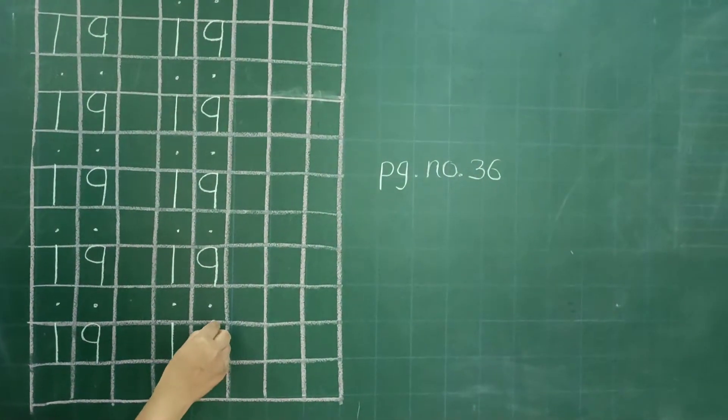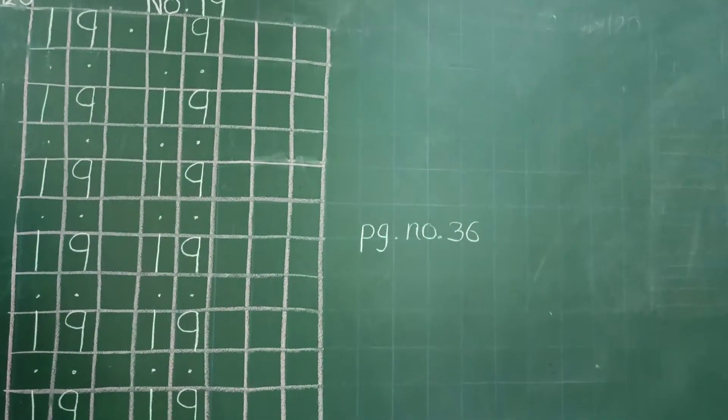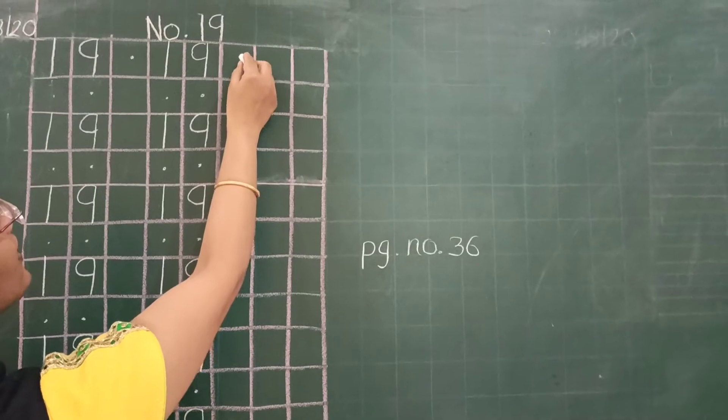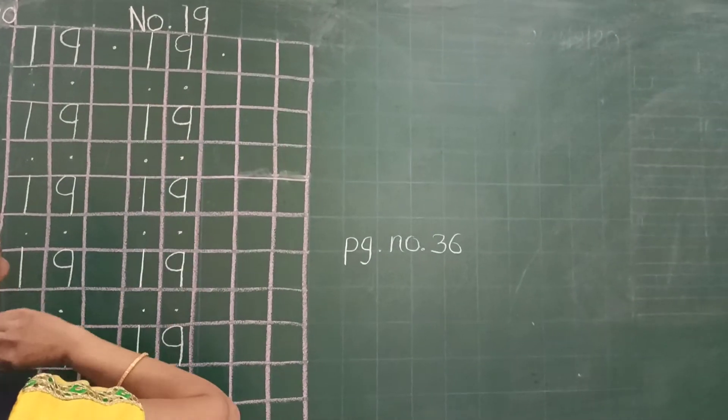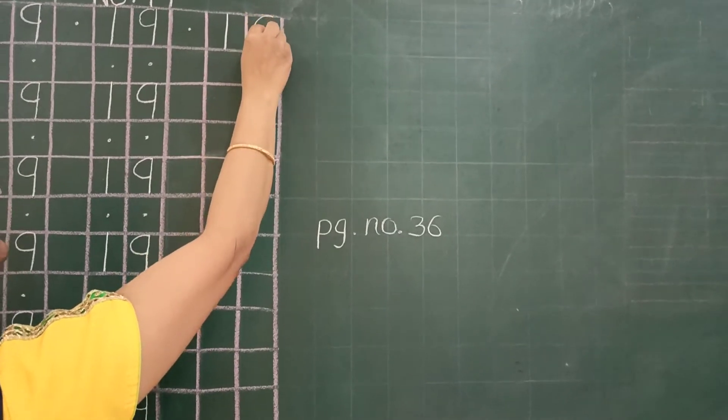And don't forget to leave these 2 boxes and write here 1, 9, 19. Then again, by writing in the next line, again leave this box and write here 1, 9, 19.